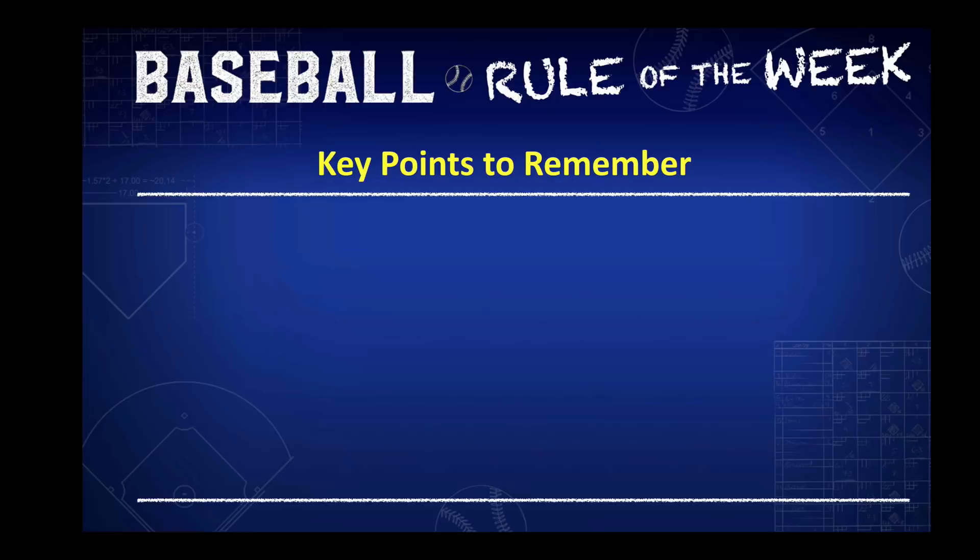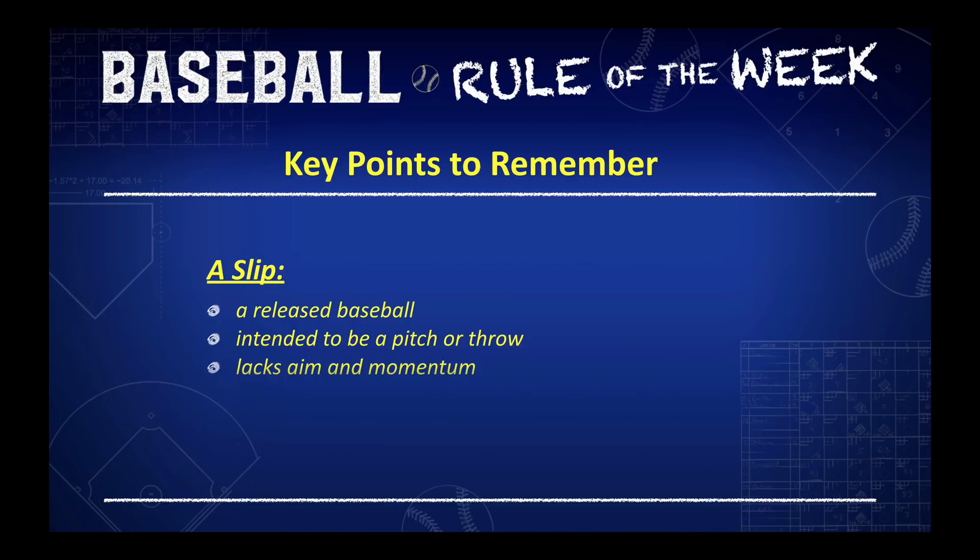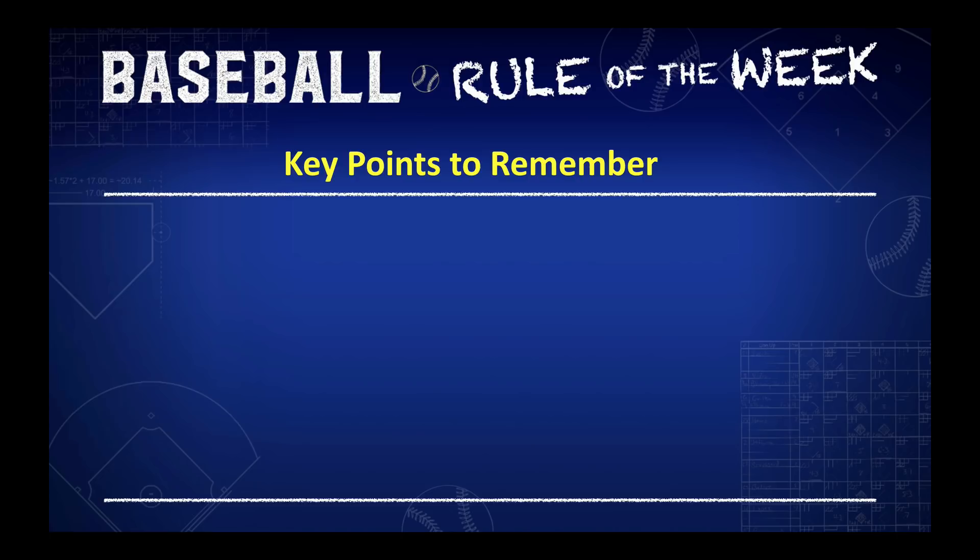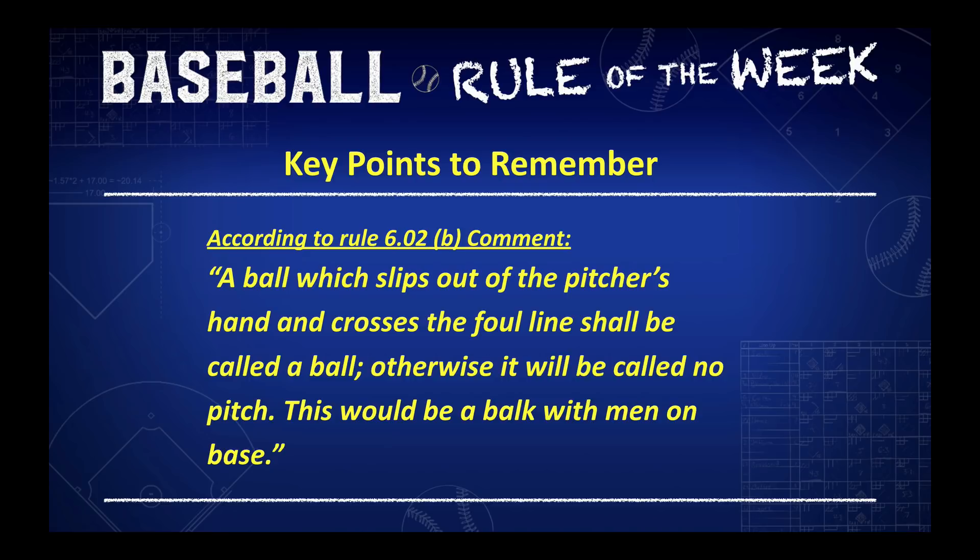Here are the key points to remember: A slip is a released baseball intended to be a pitch or throw that lacks aim and momentum. According to Rule 6.02b comment, a ball which slips out of the pitcher's hand and crosses the foul line shall be called a ball; otherwise, it will be called no pitch. This would be a balk with men on base.